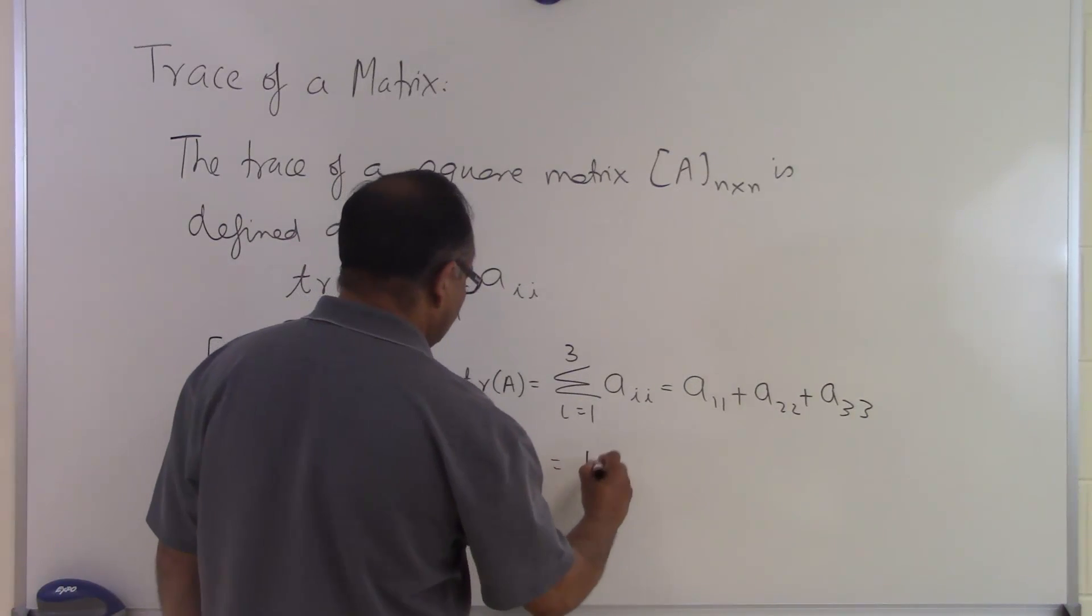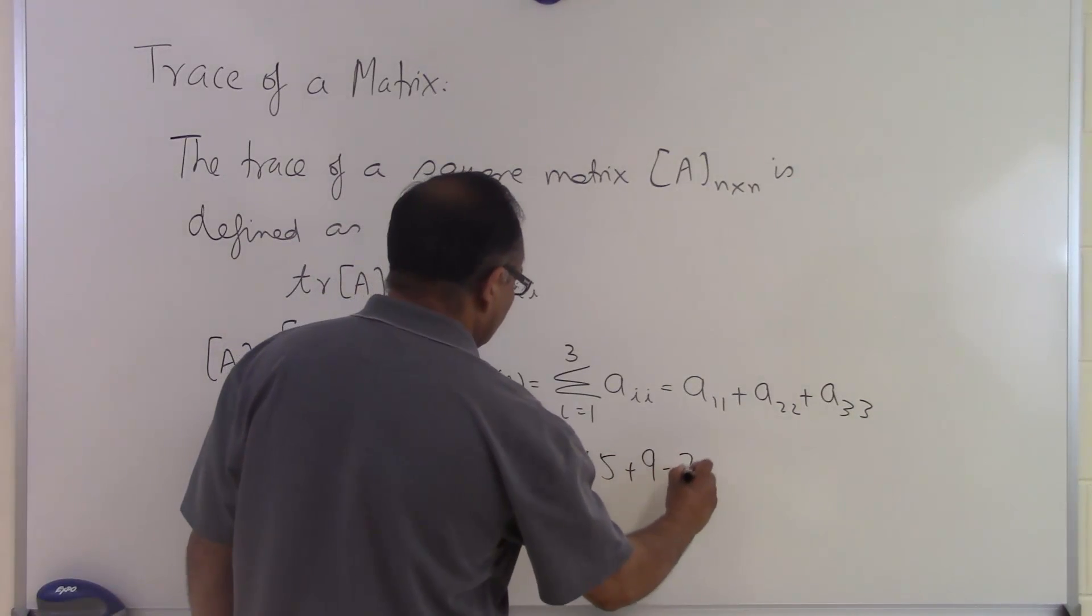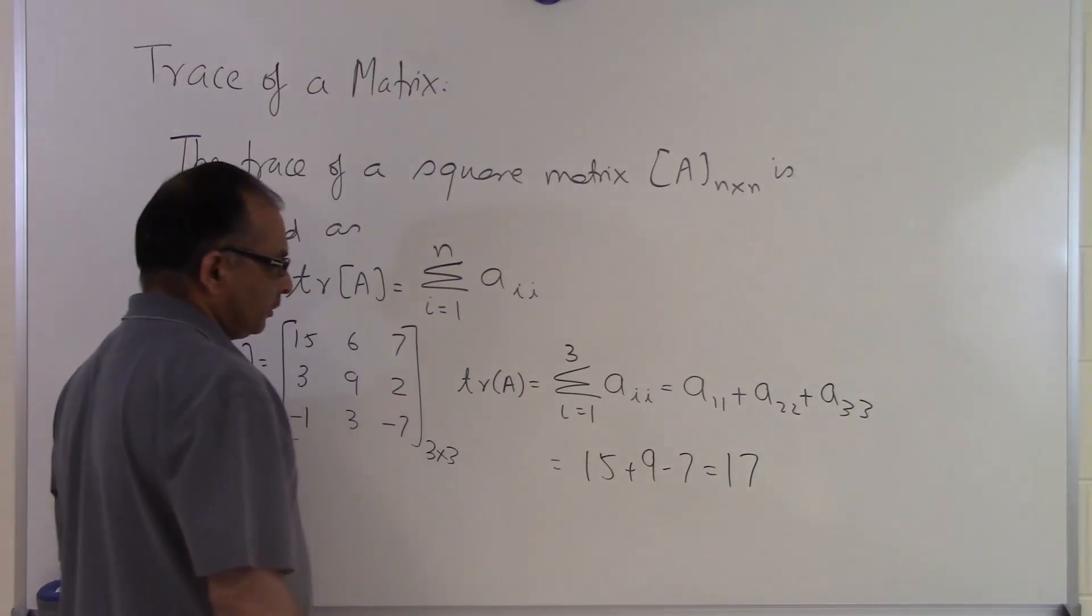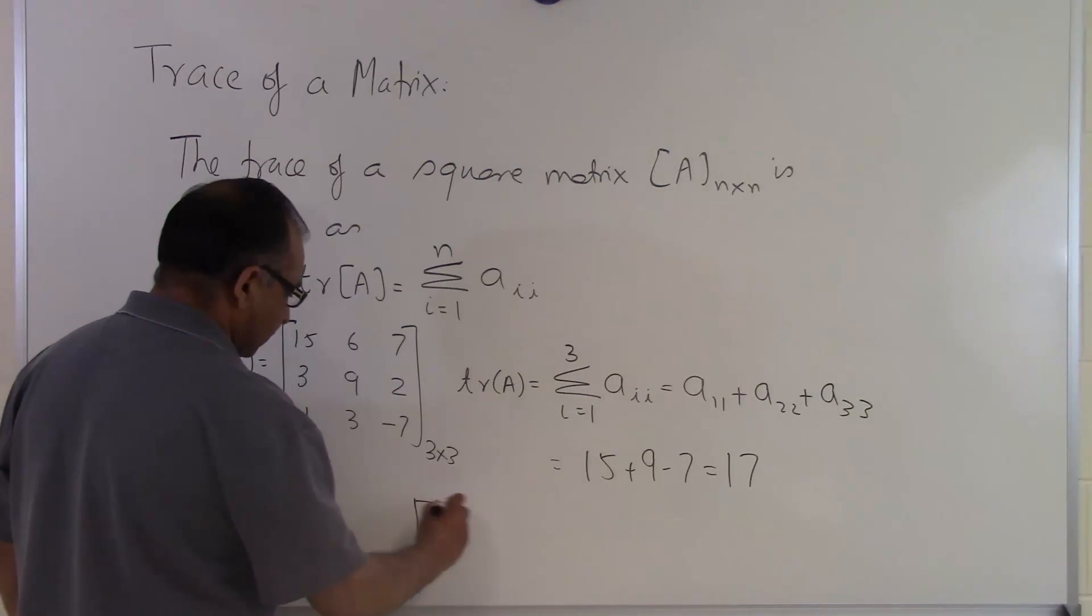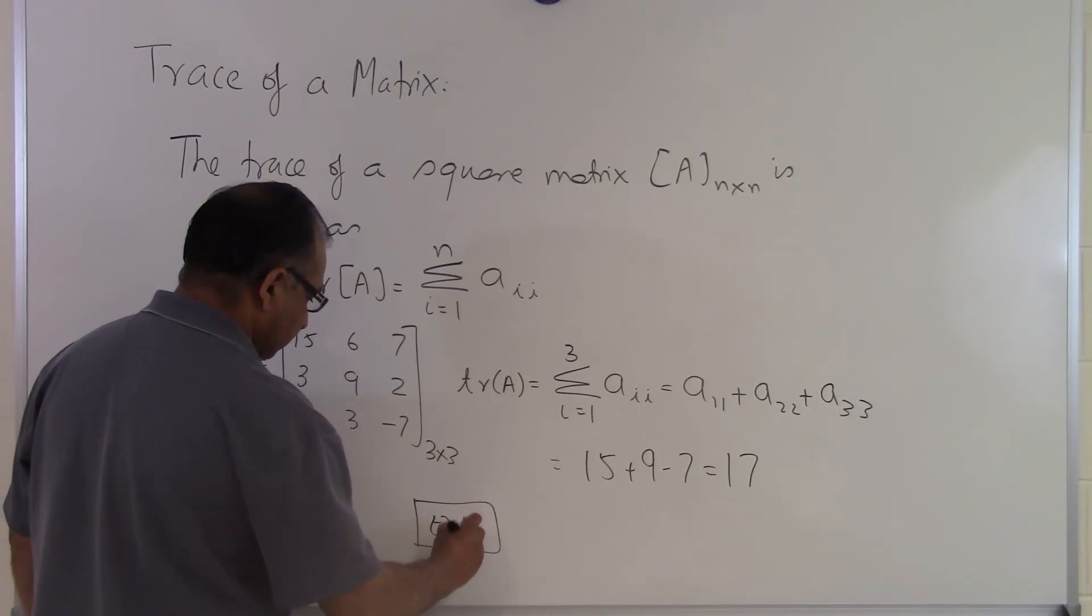So that becomes 15 plus 9 minus 7, and that becomes 17. So that's what the trace of this particular matrix is. And that's the end of this segment.